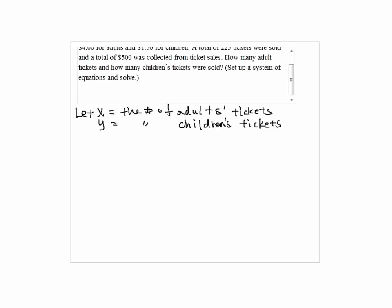So since we have a total of 225 tickets, x plus y should be 225. In terms of the value of the amount that are sold, 4 times x plus 1.5 times y is $500.